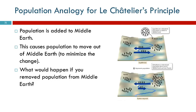So what if a whole bunch of people are suddenly added to Middle Earth? A spaceship brings people and just drops them off in Middle Earth — suddenly there are all these extra people. What's going to happen? There are more people over here, so the rate of immigration from Middle Earth to Narnia is going to increase. Initially the rate from Narnia to Middle Earth is not going to change at all, but because there are a lot more people here, the rate of immigration in this direction is going to increase.